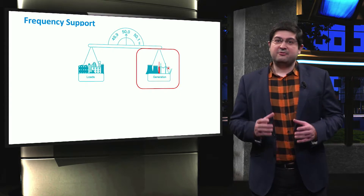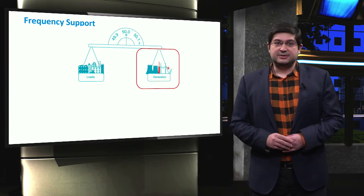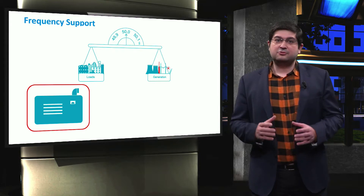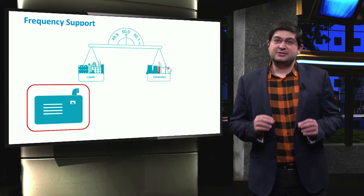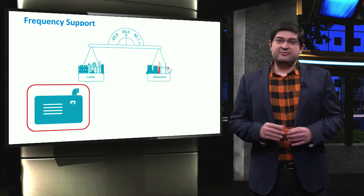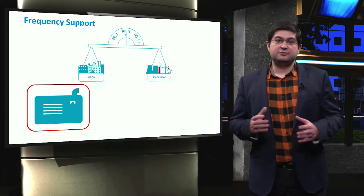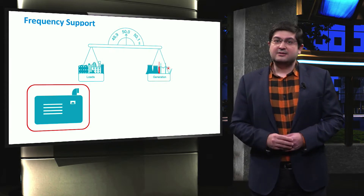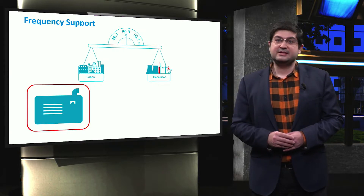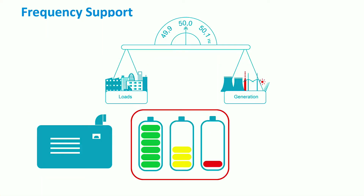The frequency can be controlled by various generating units or loads in microgrids. Diesel engines are able to control the frequency, particularly during emergency conditions, as a backup. If the amount of available fuel for a diesel engine is high, then they can continue with the islanded operation for a long period of time, for instance, for several days or weeks. Moreover, batteries are able to control the frequency mainly through their power electronic converters. The duration of the islanded operation by batteries will obviously depend on their size and the level of load consumption in the microgrid, as discussed in detail in the second week.